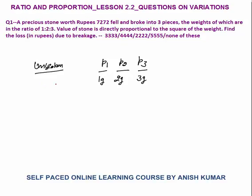The weight of the unbroken stone would be 3 plus 2 plus 1 = 6 grams, because the weight of all parts combined gives the total weight of the unbroken stone. Now, the question says the value of the stone is directly proportional to the square of its weight. To convert the variation sign to equality, we multiply by a constant k: V = k × W². So the value of the unbroken stone V = k × 6² = 36k.